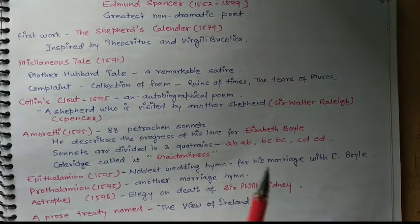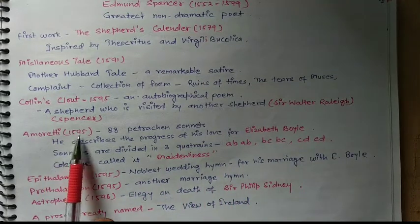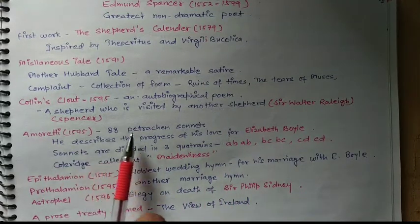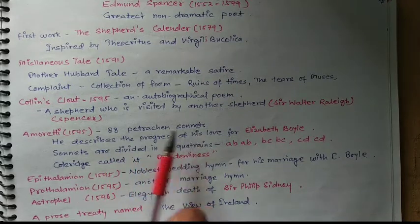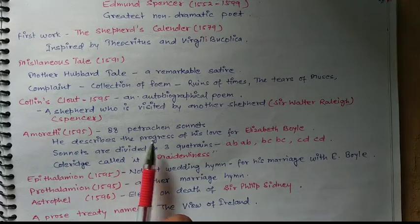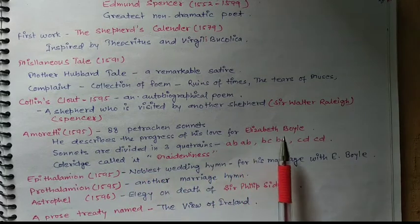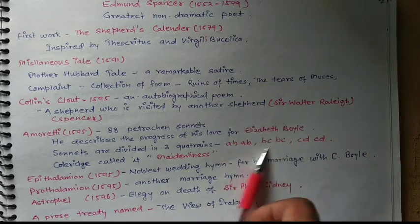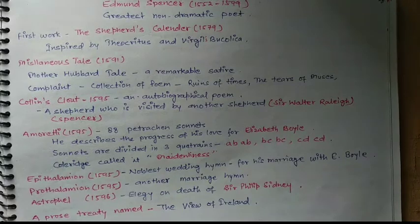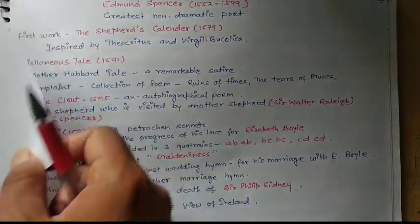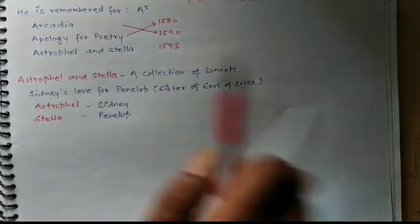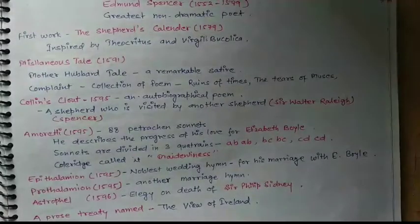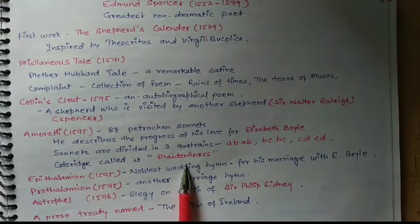Amoretti is a collection of sonnets containing 88 Petrarchan sonnets, in which Spenser describes the progress of his love for Elizabeth Boyle. Remember: Elizabeth Boyle is associated with Edmund Spenser, and Penelope is associated with Philip Sydney.